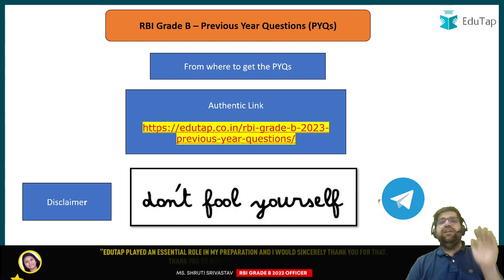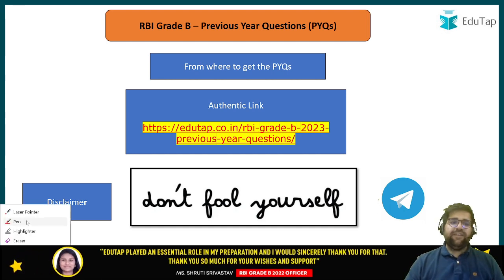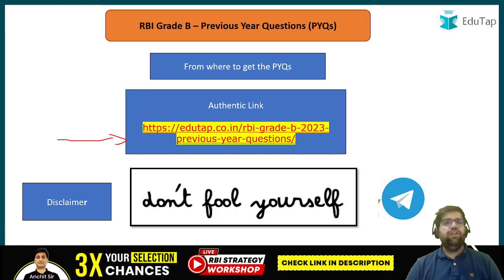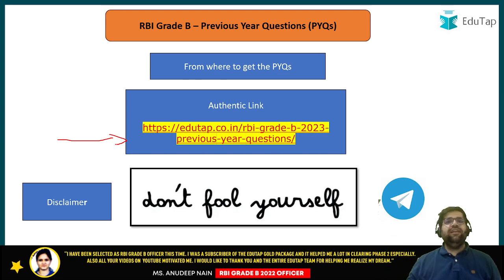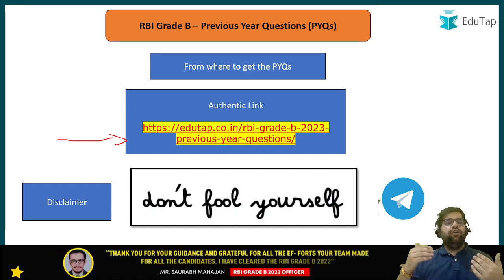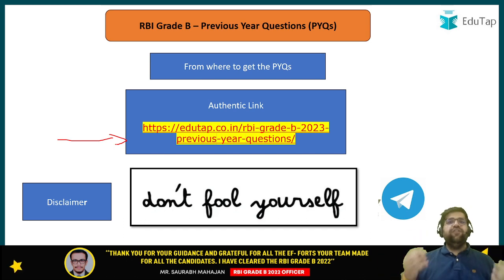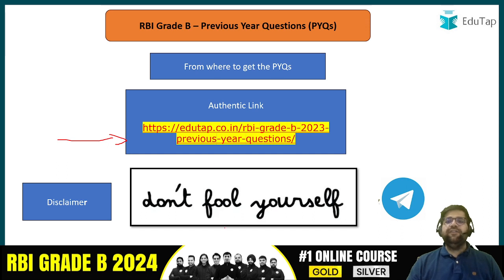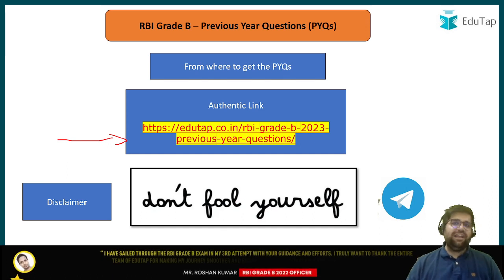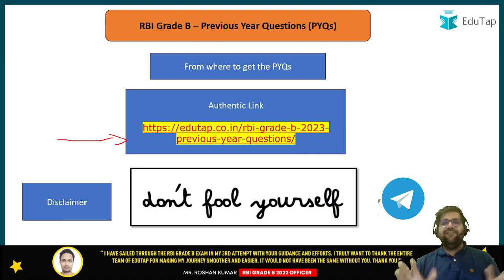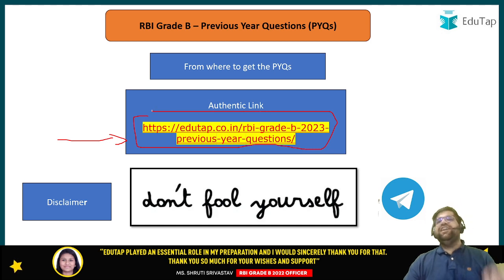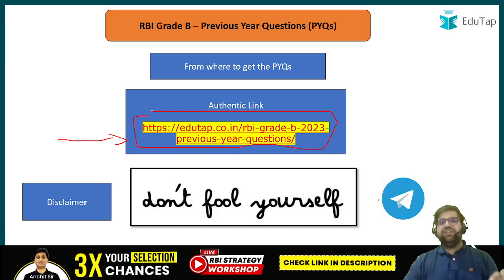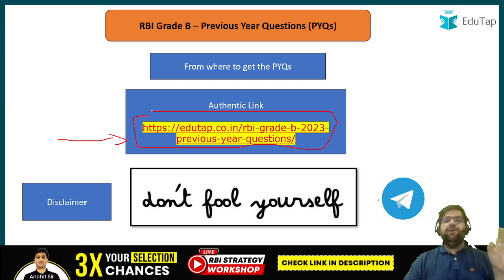Ending this video with one disclaimer: do not fool yourself on random Telegram channels. All the previous year questions we have uploaded on this link have some validity — meaning we have asked multiple students appearing in the phase 2 examination, and we also appeared in phase 2 from 2019 to 2022, getting data from first-hand information only. So do not fool yourself by solving previous year questions randomly on Telegram. If you are sitting free, you can, but the most authentic source is this particular link. If you are smart enough, download your copy and keep your preparation on the right track.